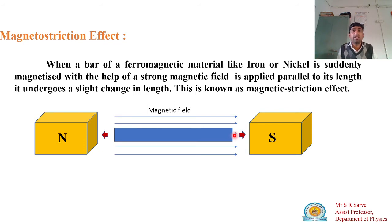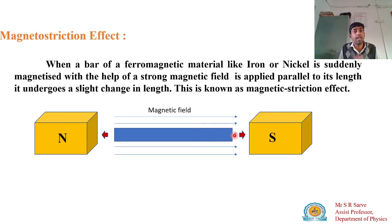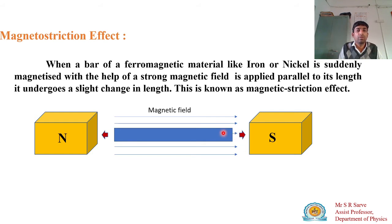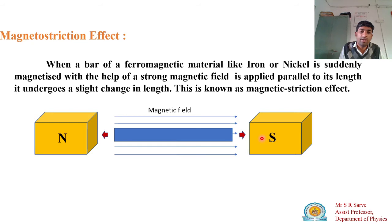The rod vibrates approximately three million times per second. Due to this very high vibration frequency, a very high frequency wave is produced — and that frequency corresponds to an ultrasonic wave. So by applying a magnetic field and repeatedly magnetizing and demagnetizing the ferromagnetic rod, its length changes and ultrasonic waves are generated.